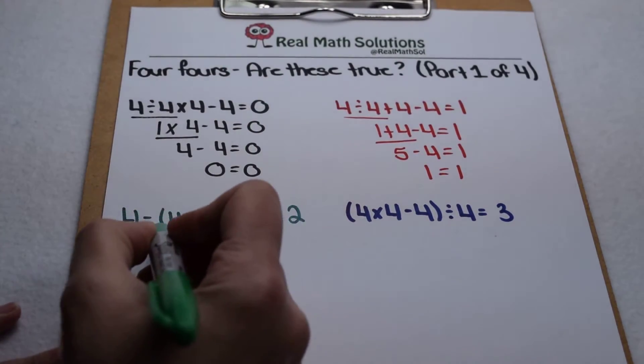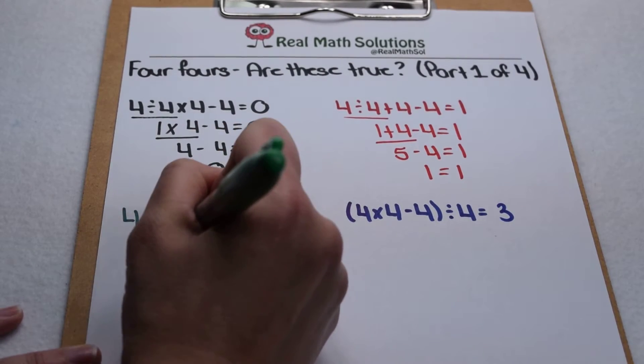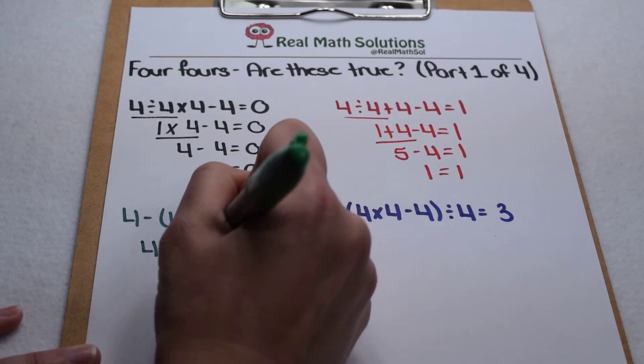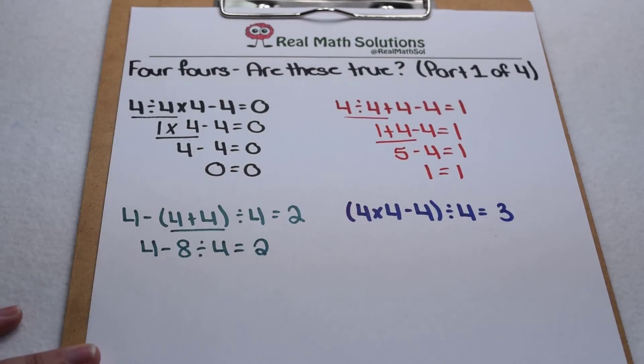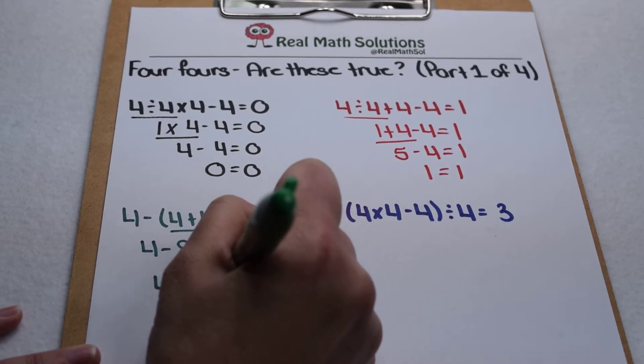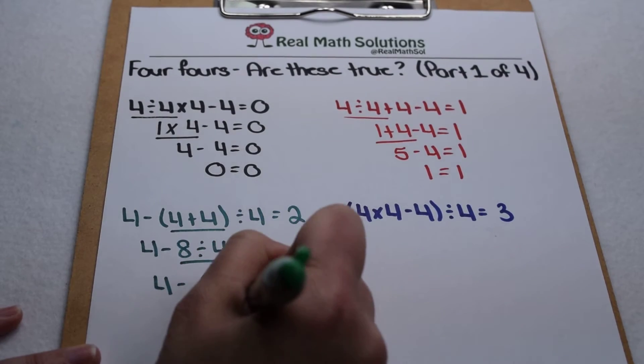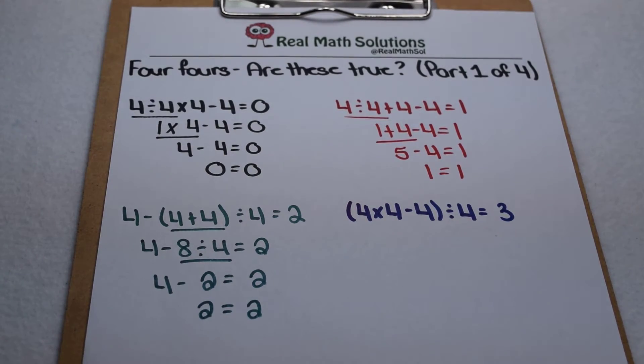Next up we start out with our parentheses. So we start out with four plus four. That leaves us with four minus eight divided by four equals two. Then division comes next, so eight divided by four, that leaves us with four minus two. Four minus two is two, so two equals two. That one also fits.